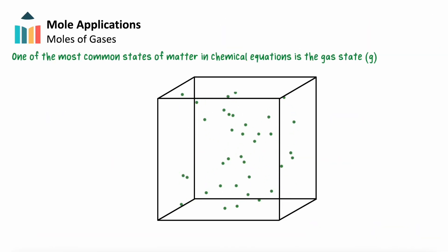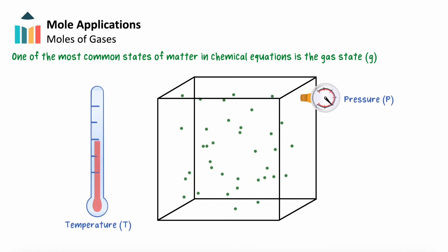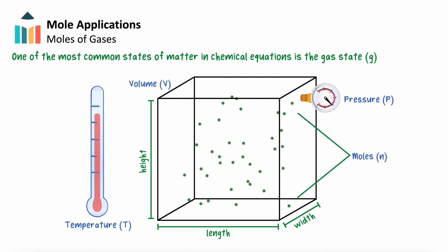The final of the most common states in which matter will appear in a chemical equation is the gas state. Because particles of a gas are widespread, separated from one another, and constantly moving, the pressure, temperature, and volume of a sample of gas all contribute to the determination of the number of moles present in the sample.